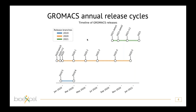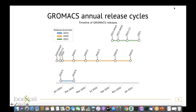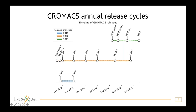With GROMACS we have a quite strict release schedule where we plan to have one major release every year, with point releases throughout the year to keep the software up to date and include bug fixes. Currently there are two major supported branches: the 2020 branch for the current release where all general bug fixes go in first, and the 2019 release which will have one more support release in a few weeks with only critical fixes that affect simulation validity.